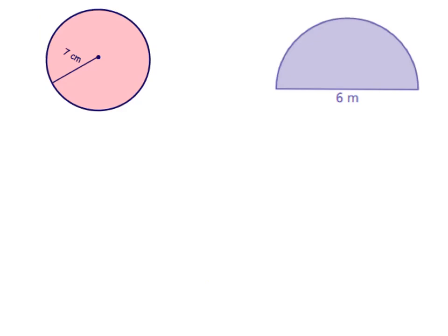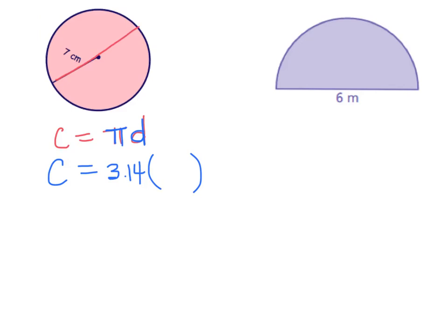Let's find the approximate circumference of another circle. Write the formula: circumference equals pi times diameter. Fill in what you know — use 3.14 for pi. The picture shows only a radius of 7, but the diameter goes all the way across, so the diameter is 14. Do 3.14 times 14 on your calculator — I get approximately 43.96 centimeters. There's my circumference.